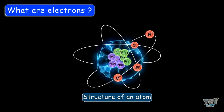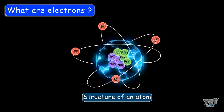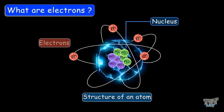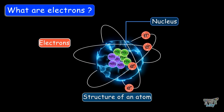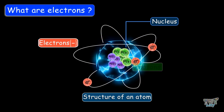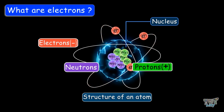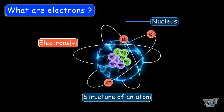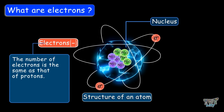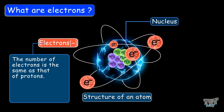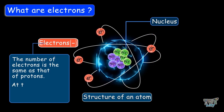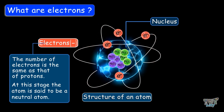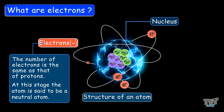We will study the structure of the atom in order to understand what electrons are and also what is electricity. The atom consists of a nucleus and electrons revolving around it. Electrons are negatively charged, and the nucleus consists of protons and neutrons. Protons are positively charged and neutrons are neutral — neither positive nor negative. Electrons are the same in number as protons, so an atom has equal positive and negative charges and is said to be a neutral atom.